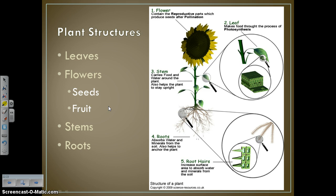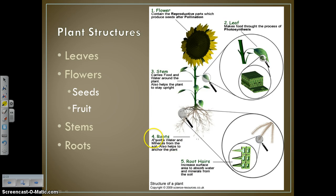Now for the main structures of plants and their functions. The function of a flower is to contain the reproductive parts, which produce seeds after pollination. The purpose of a leaf is to make food through photosynthesis — this is where you have all your chloroplasts and chlorophyll, which is why they're green. The function of a stem is to carry food and water around the plant via xylem and phloem, and to help the plant stay upright. Roots absorb water and minerals from the soil and anchor the plant. Root hairs increase the surface area to absorb more water and minerals. Seeds grow into new plants, and fruit — produced from the ovary — protects the seeds.